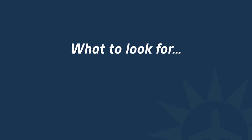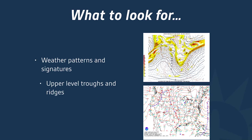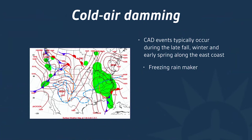Here are a few different signature weather patterns to look for. Forecasters spend a lot of time looking at weather patterns to understand what's happening, and pilots can do the same. You can look at upper level troughs and ridges, but today I'm going to focus more on what's happening at the surface. Most pilots are familiar with looking at a surface chart, so we're going to look at the position of surface features.